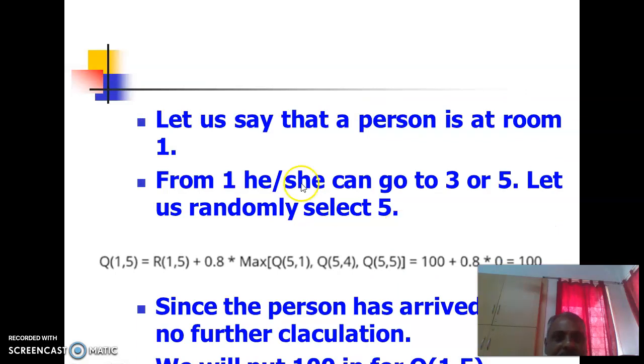Now let us say that the person is at room number 1. From room 1 he or she can go to 3 or 5, but our goal is to go to 5. Let us randomly select 5.